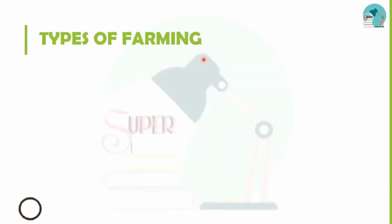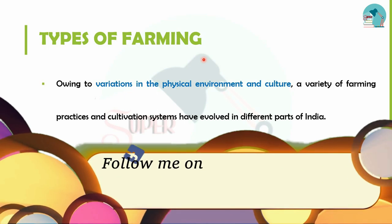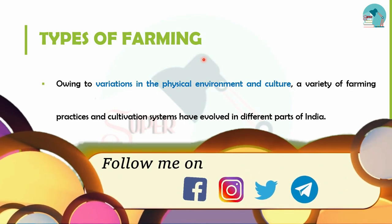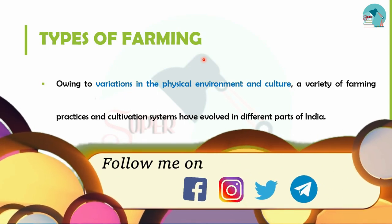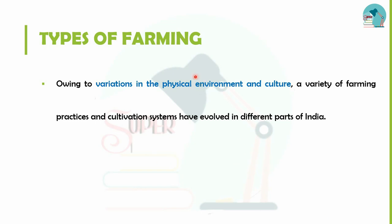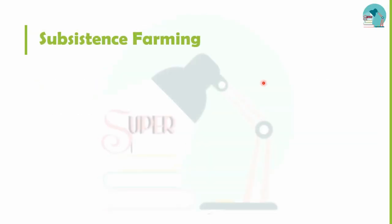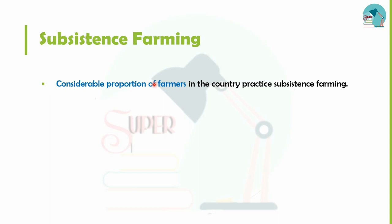Next is farming order types. There are many varieties of farming, and it depends on the physical environment, culture, etc. In India, different parts of the country follow different farming methods. First, we will talk about subsistence farming — a considerable portion of farmers practice this in our country.